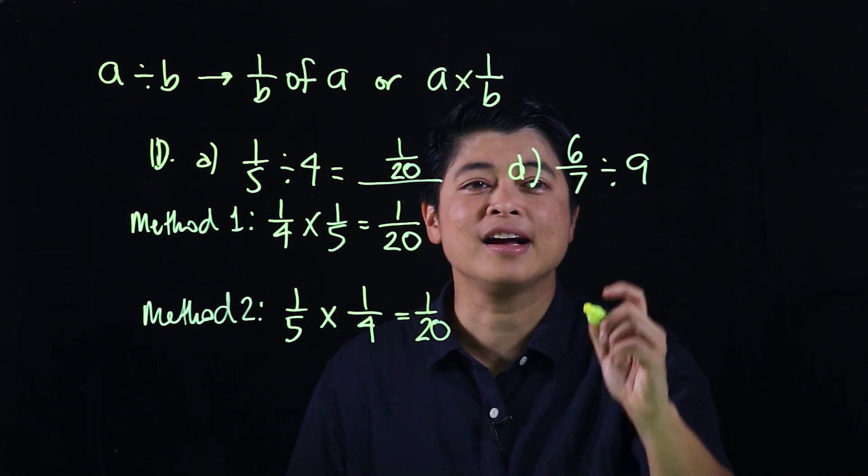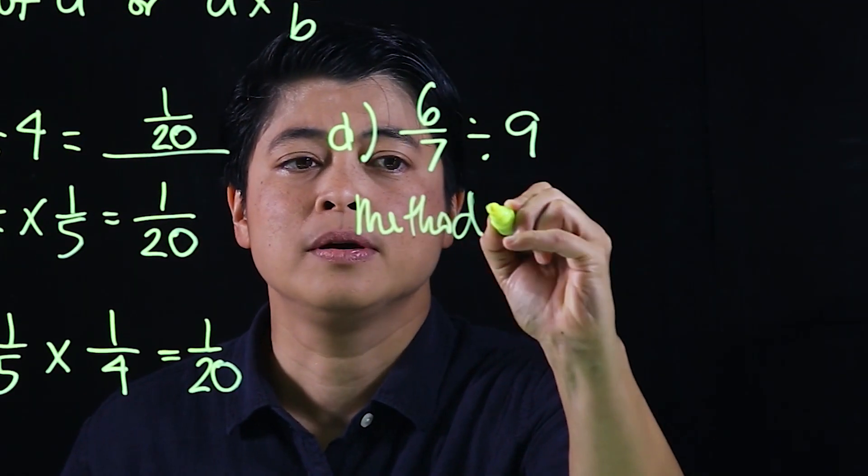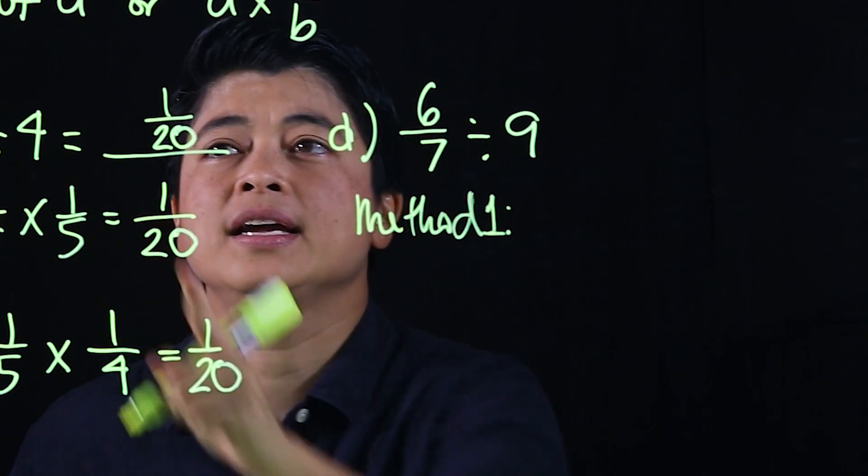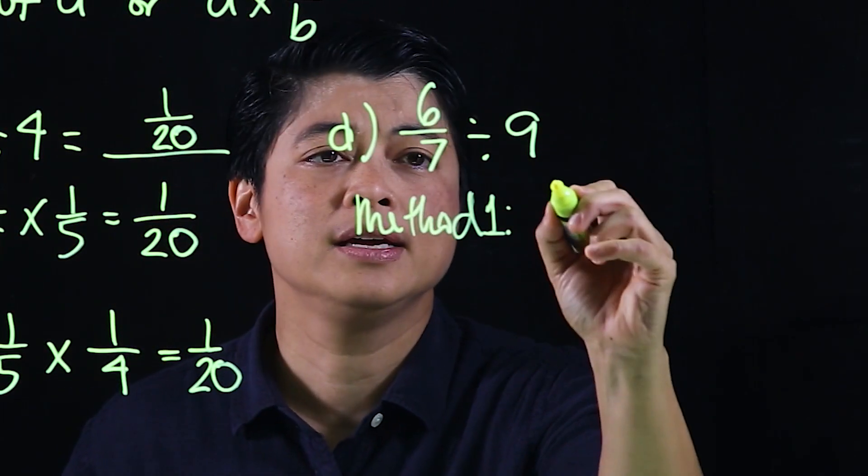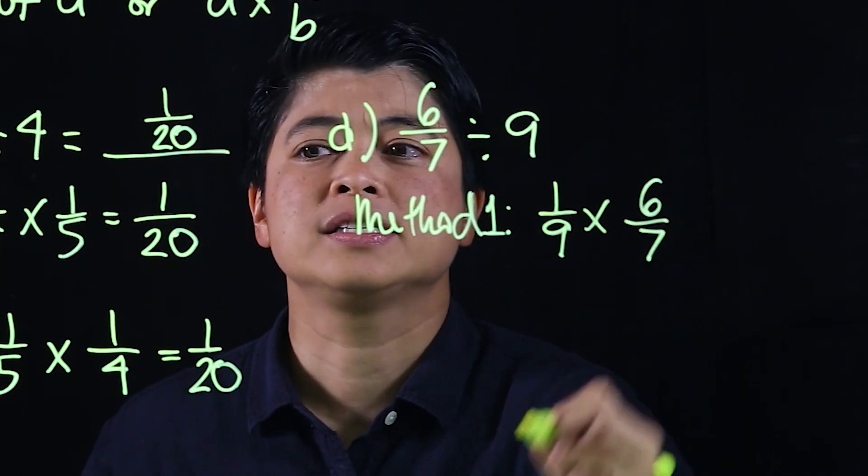Looking at letter D, I'll again do this one in two methods. Method 1 is 1/9 times 6/7.